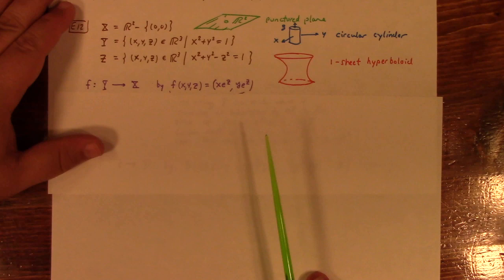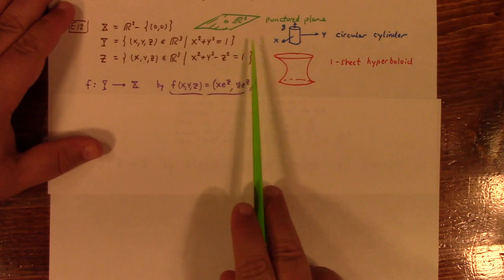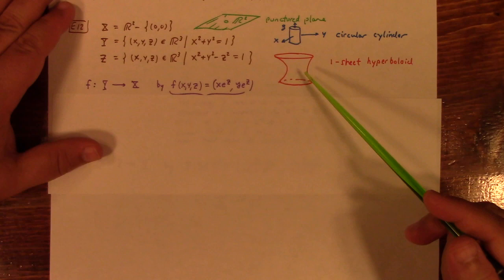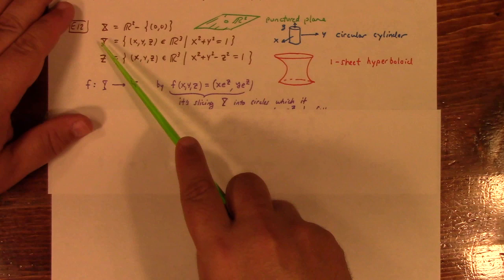Example 12, also very cool, still very geometric. You have three sets. The punctured plane, which is just a plane with the origin removed. People usually call this the right circular cylinder, the unit radius, centered at the z-axis. And then the one-sheet hyperboloid, which you define by this equation here. Like you might see in a cooling tower of a nuclear reactor, for example. So, here's the map that goes, the homeomorphism from Y to X. F of X, Y, Z is X, e to the Z, Y, e to the Z.